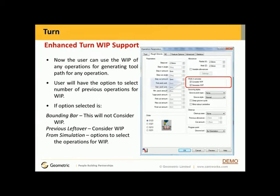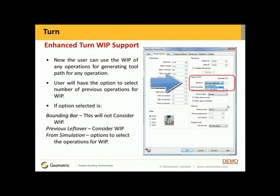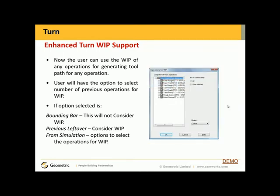Enhanced turn work-in-process support. As you can see from the dialog on the right-hand side, in CAMWorks 2010 and previous versions the only options you had were 'consider work in process' and 'generate work in process.' That's now been changed in CAMWorks 2011. We now have the option of 'previous leftover from simulation' or a 'bounding bar.' If the bounding bar is selected it will not consider work in process. If previous leftover is selected it will consider work in process. For simulation there are options to select the operations for work in process, so you can simply uncheck operations you don't want considered, such as facing operations, and select OK.